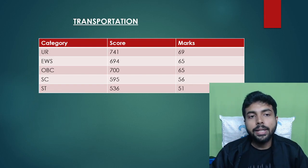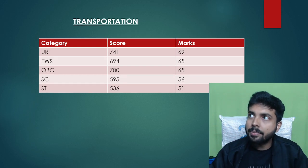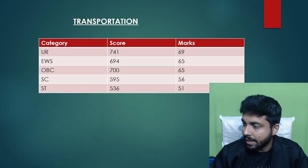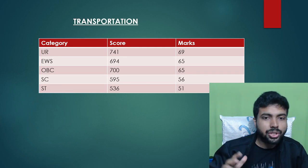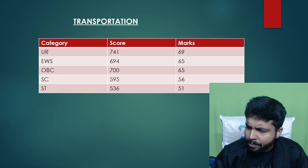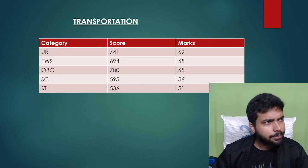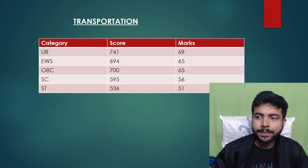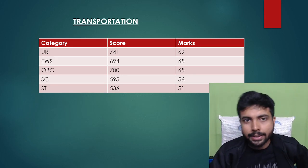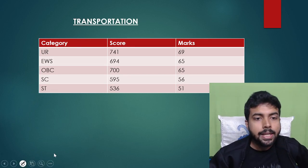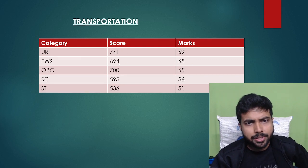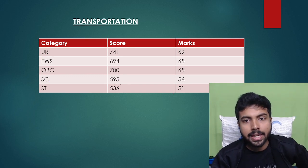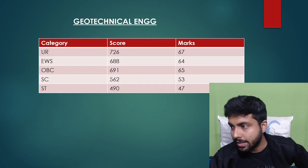Transportation Engineering cutoff is 741, which is around 69 to 70 marks for the general category. The transportation sector is an emerging field — though it was declining, recently many government projects like highways, railways, and metro connectivity have revived it. EWS requires 65 marks. OBC cutoff is around 694 to 700. SC requires 595 score and 56 marks. ST category needs about 50 to 51 marks.